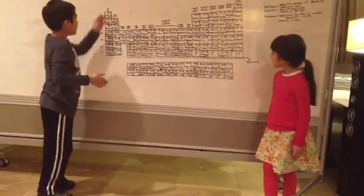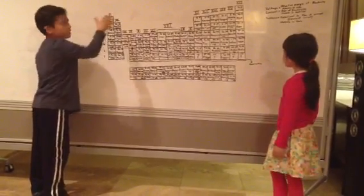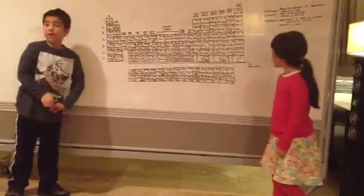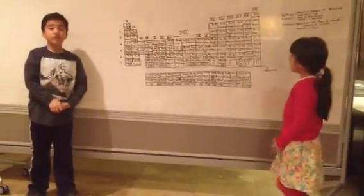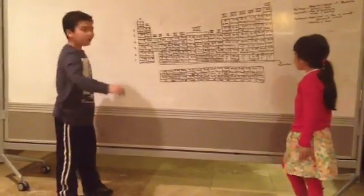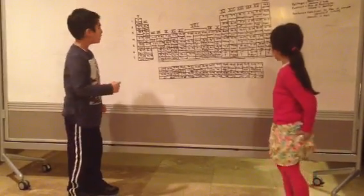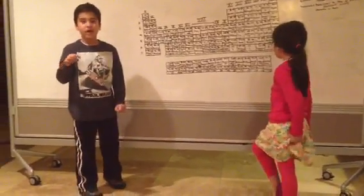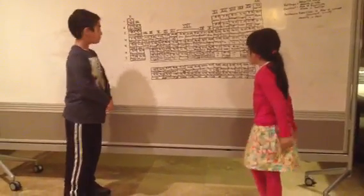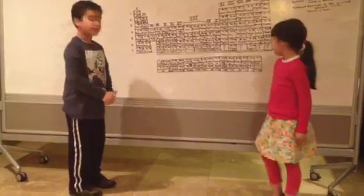You have the alkali metals: hydrogen, lithium. These are the alkali metals. Hydrogen should be a non-metal, but the reason it's an alkali metal is because it has only one electron, and alkali metals have a positive one charge. Then you have the alkaline earth metals, which have positive two charges.